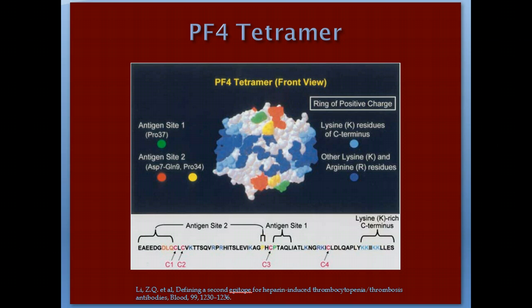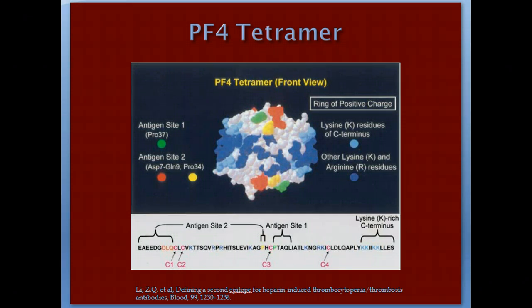Under normal circumstances, PF4 is only minimally secreted from the platelet into plasma. Once you infuse heparin, the level increases 20 to 30-fold. Since heparin is a very negatively charged compound, there is a 15 to 30-fold increase in PF4, and they attach to each other forming the PF4-heparin complex. When heparin attaches to PF4, it causes conformational changes on its surface forming new epitopes — antigen binding sites where the HIT antibody will attach. There are also other molecules that bind to PF4 and induce the same new epitopes, some of which are used in antigen assays.